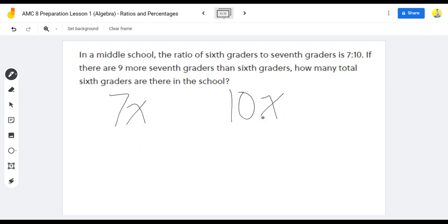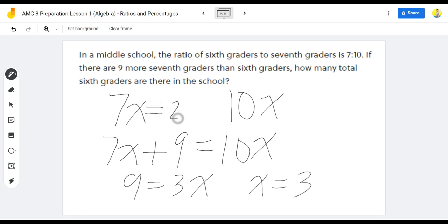If there are 9 more seventh graders than sixth graders, that means that 7x plus 9 equals 10x, meaning that 9 equals 3x, and that x equals 3. So how many total sixth graders are there in the school? 7x is the total number of sixth graders in the school. x equals 3, so 7x equals 21.